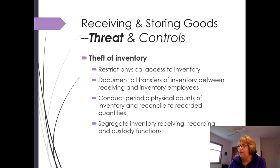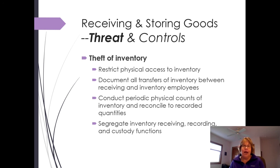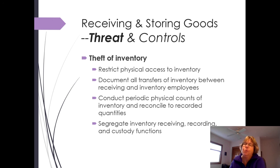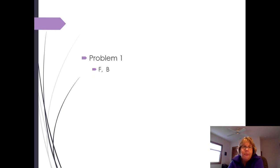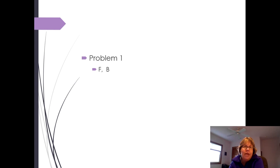Regarding theft of inventory: basically all of these controls were talked about in the last chapter except the last one. Segregate who receives inventory, who records it, and who has custody. When you receive it you temporarily have custody, but you transfer that to the inventory stores. Somebody else should usually record it — or it gets recorded automatically with the scanning. Take a couple minutes and go back to problem one on page 302 and look at problems B and F — B as in boy, F as in Frank.